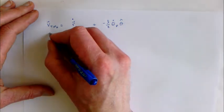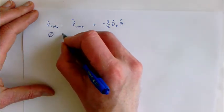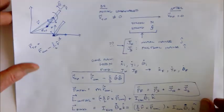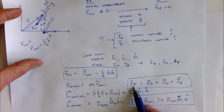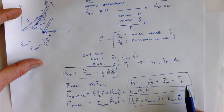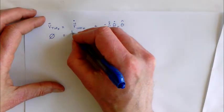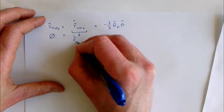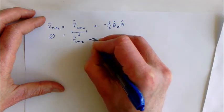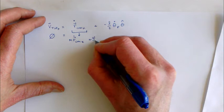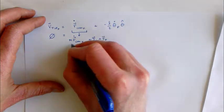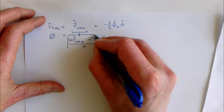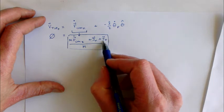We know that this tip velocity has to be zero. We can apply momentum conservation to come up with an expression for what the linear velocity of the center of mass is. We know that the final momentum is the initial momentum plus the impulse, so this term is simply going to be whatever the initial momentum is plus the impulses, divided by the mass. That is what the final velocity of the center of mass is in terms of those two impulses.